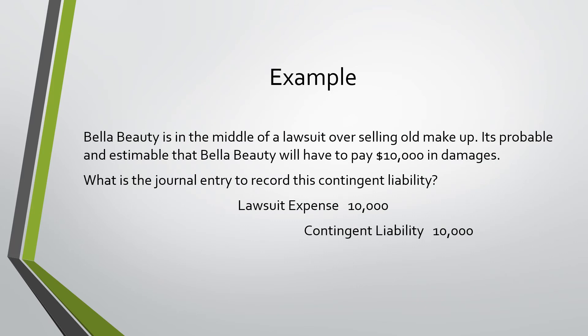In this example, Bella Beauty is in the middle of a lawsuit over selling old makeup. It's probable and estimable that Bella Beauty will have to pay $10,000 in damages. The journal entry to record this contingent liability: we would debit lawsuit expense for $10,000 and credit contingent liability for $10,000, because we can both estimate it and it is probable it will occur.